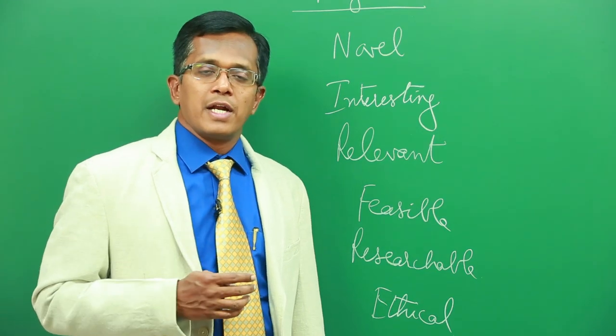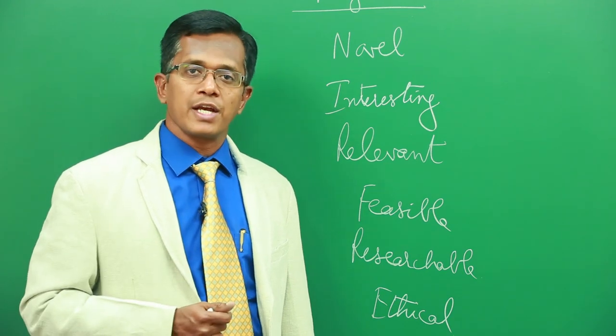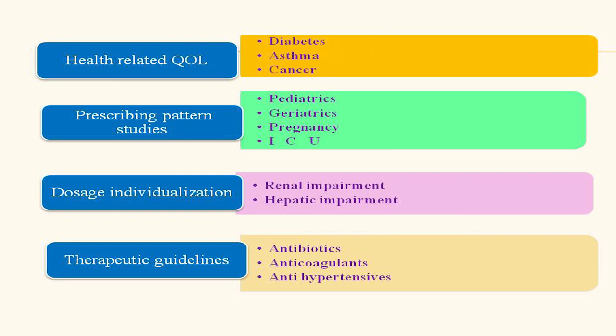In special populations like renal impairment or hepatic impairment patients, the dosage individualization can be taken up as a project and therapeutic guidelines can be prepared through projects, especially for antibiotics, anticoagulants and antihypertensive medications.